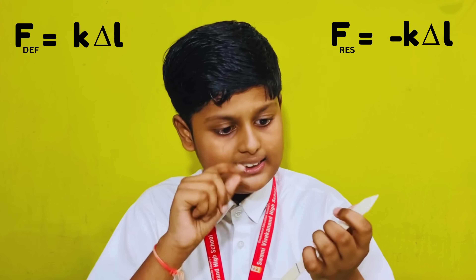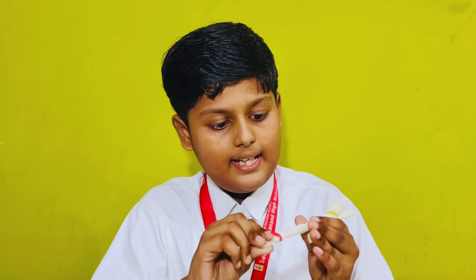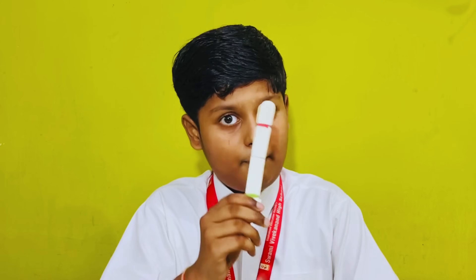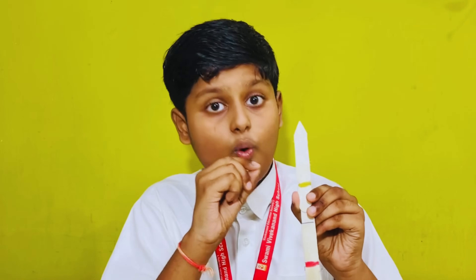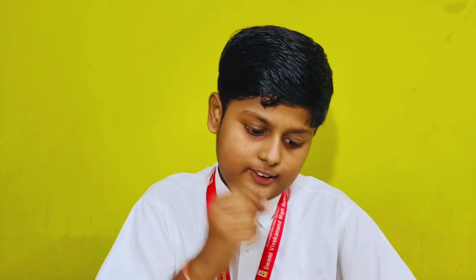The second concept is conservation of angular momentum. Look at this blade — it's long. When I prime it, observe the speed of the blade. Now observe the speed of the smaller blade. Do you see the difference? This blade is smaller than that one, and it moves faster because of the conservation of angular momentum.